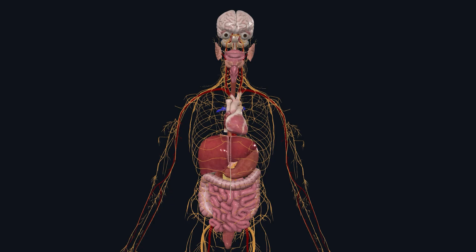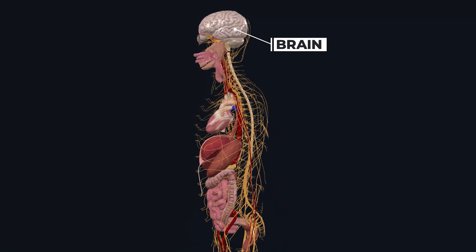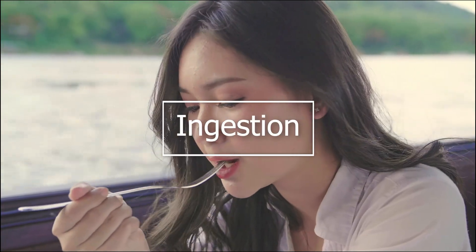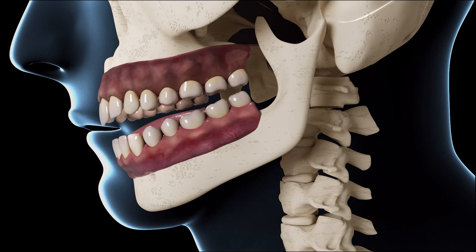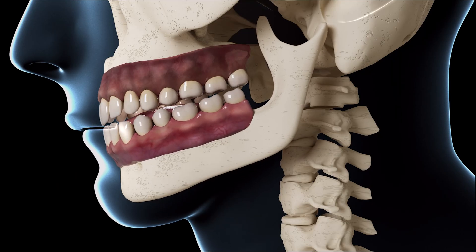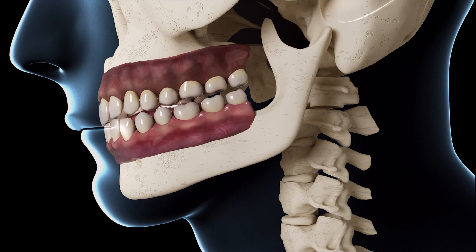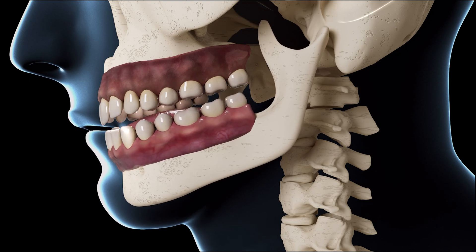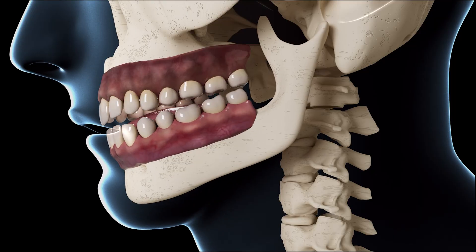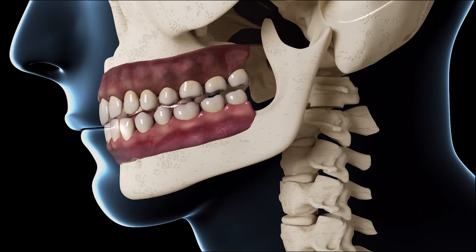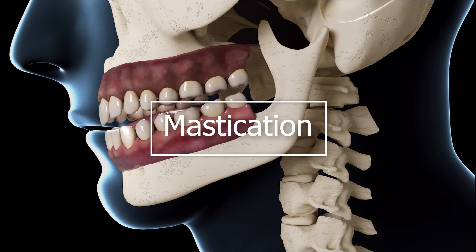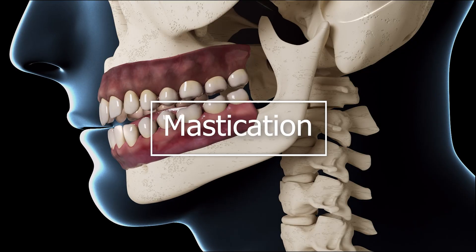When our body starts running low on energy molecules, our brain sends a signal, making us feel hungry, and we eat food. The process of eating food is called ingestion. As soon as we put food in our mouth, the first step of digestion begins, which is mechanical digestion — the breaking of food into smaller pieces using force from the teeth. This process is also known as mastication.